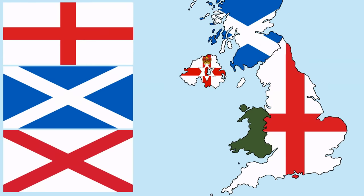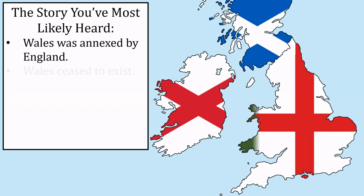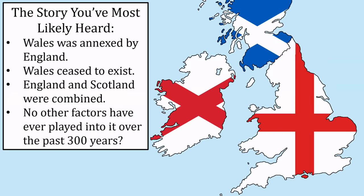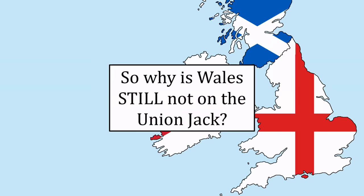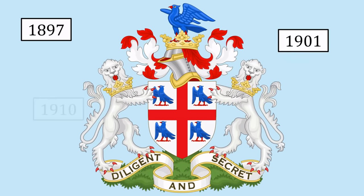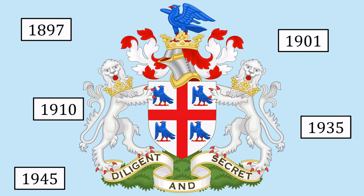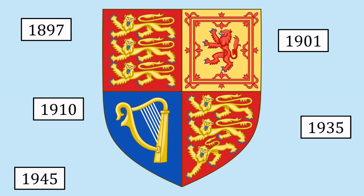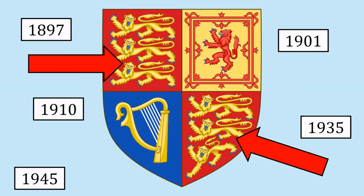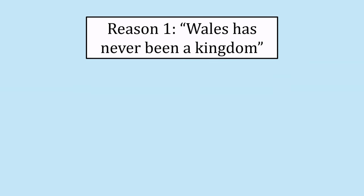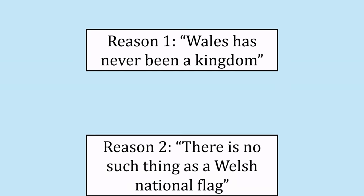Most people just stop there — Wales was annexed, and James VI combined these two flags, so Wales isn't there. But this whole thing happened over 300 years ago, and Wales still isn't on the Union Jack. The College of Arms was petitioned five times between 1897 and 1945 to consider adding the Welsh dragon back to the Royal Coat of Arms, presumably replacing one of the two Englands. However, they were rejected for two reasons: 'Wales has never been a kingdom,' and 'there is no such thing as a Welsh national flag.'